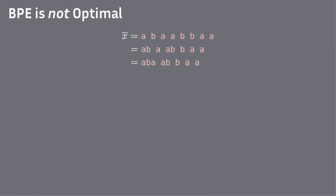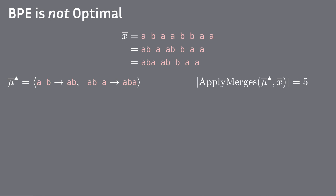Consider the sequence. The most frequent pair is A and B, so we merge it. Then AB and A, so we merge it. After two greedy merges, we have a sequence of five units.